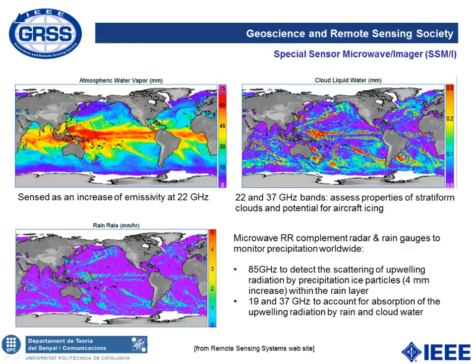There's also the possibility of retrieving rain rate. Rain rate is measured with rain gauges and other sensors, but the good thing about microwaves is all-weather capability, which nicely complements other observations. The frequency at 85 GHz is used to detect scattering of radiation with ice particles in rain, and channels 19 and 37 are used to account for absorption of radiation by rain and cloud water.